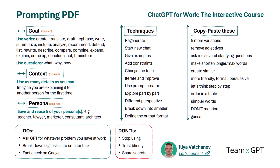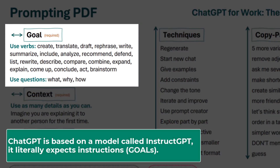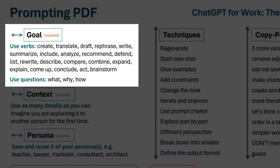The goal is always required. ChatGPT is based on a model called InstructGPT — it literally expects instructions and performs best when you provide them. Provide the AI with instructions by using verbs like create, translate, draft, rephrase, write, summarize and so on. Another way to define a good goal is to ask a question like what, why, or how.